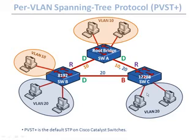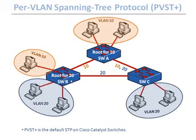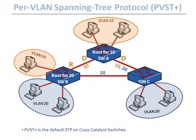By changing the root bridge's priority, we can alter who becomes the root bridge for different VLANs. With per-VLAN spanning tree, we can make switch A the root bridge for only VLAN 10. Switch A's ports are then designated forwarding, but only for VLAN 10 traffic. Switch B and switch C choose their root ports, and then switch B and switch D choose their designated and blocking ports — but this spanning tree configuration is only for VLAN 10 traffic.